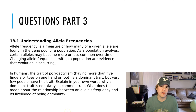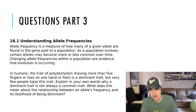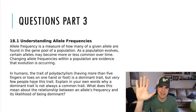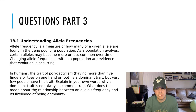Questions part three covers understanding allele frequencies. Allele frequency is a measure of how many of a given allele are found in the gene pool of the population. Changing allele frequencies is evidence of evolution. In humans, the trait of polydactylism — having more than five fingers — is a dominant trait, yet very few people have it. Explain in your own words why a dominant trait is not always a common trait, and what this means about the relationship between an allele's frequency and its likelihood of being dominant.